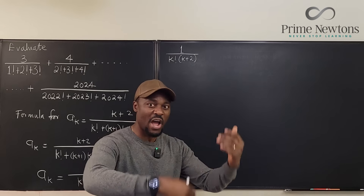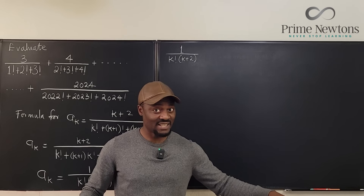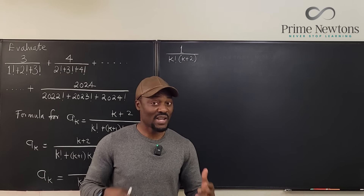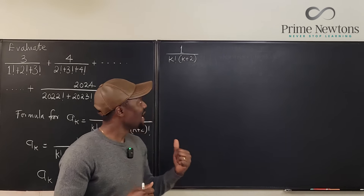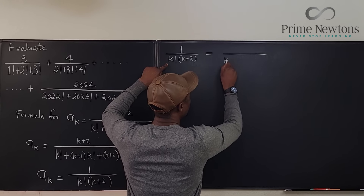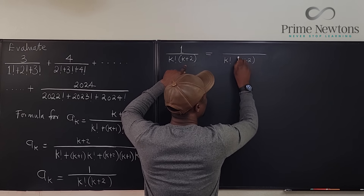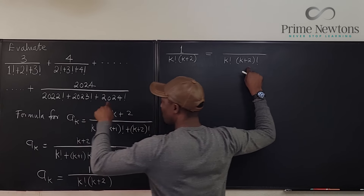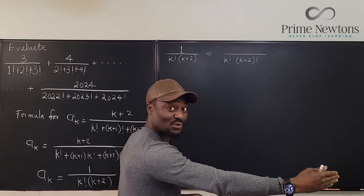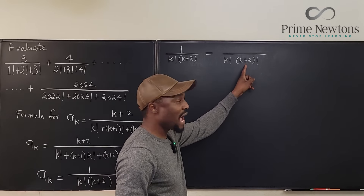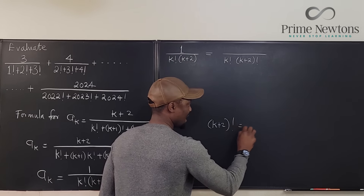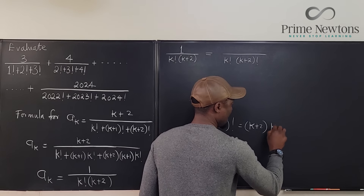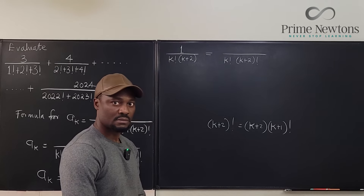However, we cannot just compute all of these starting from one to 2024. But we can do it if we find something that cancels everything in the middle so we can only deal with the beginning and the ending — and that's a telescoping series. Your calc two skills will come in here. How can we make this into a telescoping series? Instead of writing k factorial, I'm going to write k plus two factorial in the denominator.